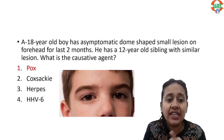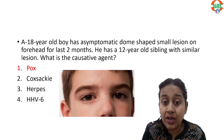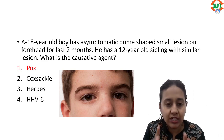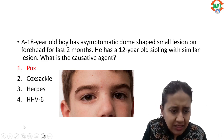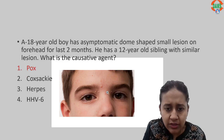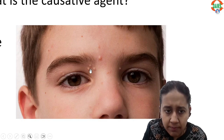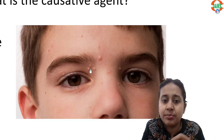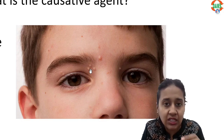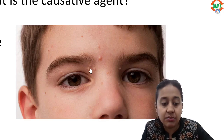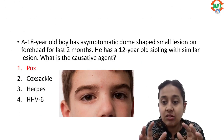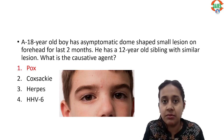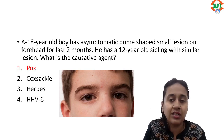The second question: an 18-year-old boy has an asymptomatic dome-shaped small lesion on the forehead for the last two months. Looking at the image, the lesions are dome-shaped, and if you look carefully, there is umbilication — a depression in the center — and a white cheesy material comes out of it. They are asking that the patient has a very similar complaint in one sibling also. What is the diagnosis?